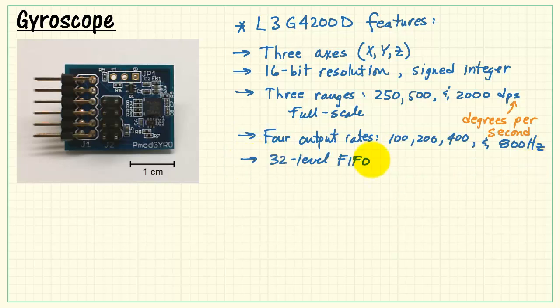We have four output rates, ranging from 100 up to 800 Hz. A 32-level FIFO, we have threshold detection as well. Both of these functions can generate interrupts.